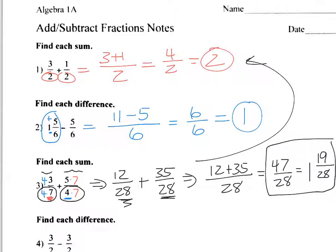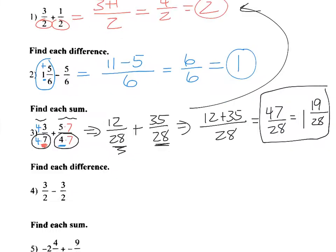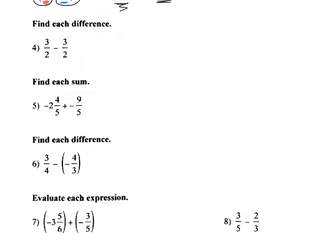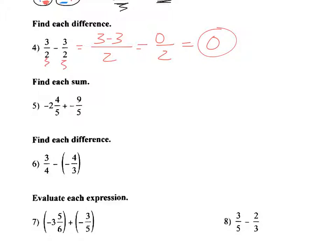Number four: we have a common denominator of two, so that becomes three minus three over two, which is zero over two. You can divide zero by a number — you just cannot divide by zero — so zero is our simplified answer. These are not equations so we can't call it a solution.